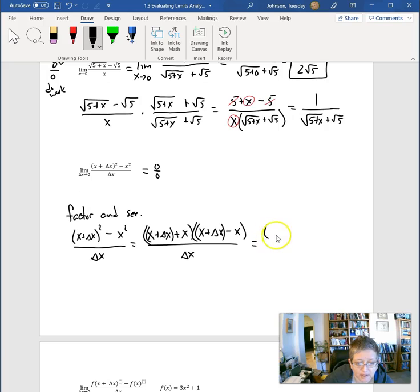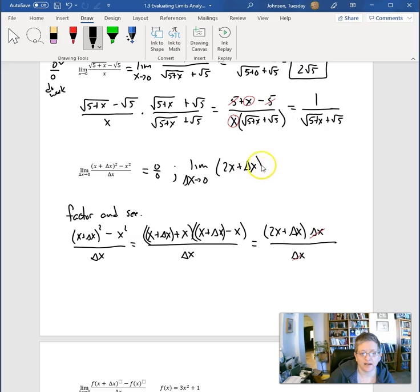I'm looking here in this first set of parentheses, I have the first one, 2x plus delta x. And in my second set of parentheses, I just have a delta x. Well, what do you know, how do you like that, the delta x's cancel out. And now I'm looking at the limit as delta x approaching 0 of 2x plus delta x.